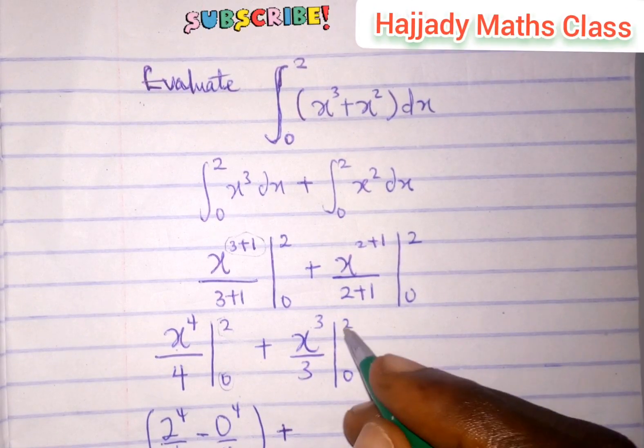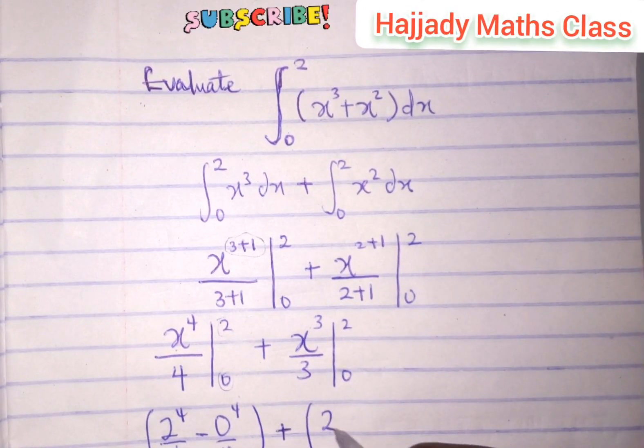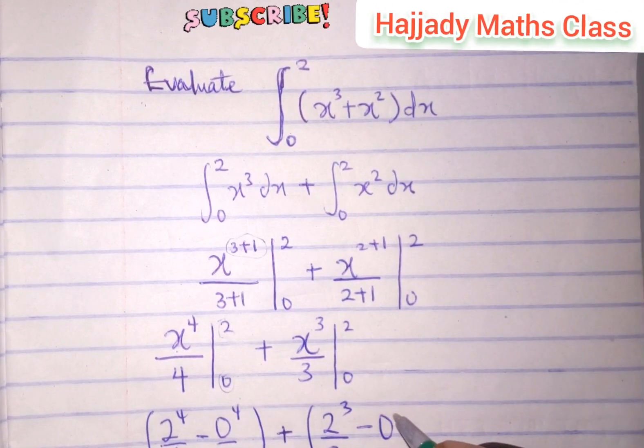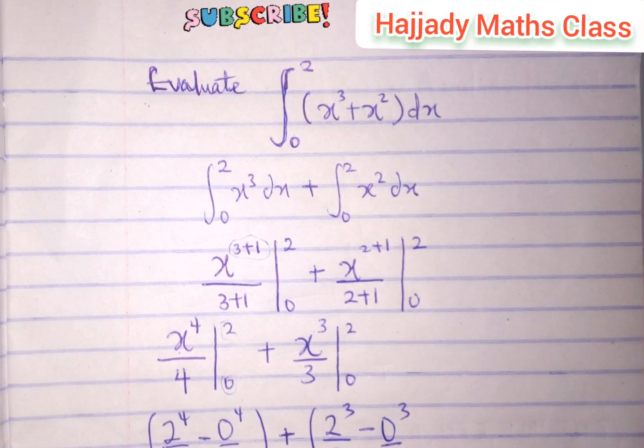So that is for this. For the upper limit minus the lower limit, plus, the same thing will be done here: 2 raised to the power 3, all over 3, minus 0 raised to the power 3, all over 3.